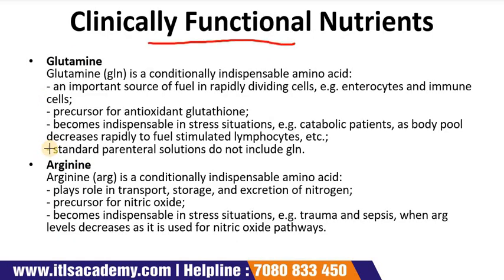Next are clinically functional nutrients, also referred to as novel substrates. These include nutrients that may have clinical benefits if given in larger than usual intake in specific medical conditions. The first substrate is glutamine — a conditionally indispensable amino acid, an important fuel source for rapidly dividing cells such as enterocytes and immune cells, and a precursor for the antioxidant glutathione. It becomes indispensable in stress situations such as catabolic patients, as body pools decrease rapidly. Glutamine supplementation is associated with decreased mucosal atrophy after prolonged parenteral nutrition, decreased bacterial translocation, and increased systemic immune function.